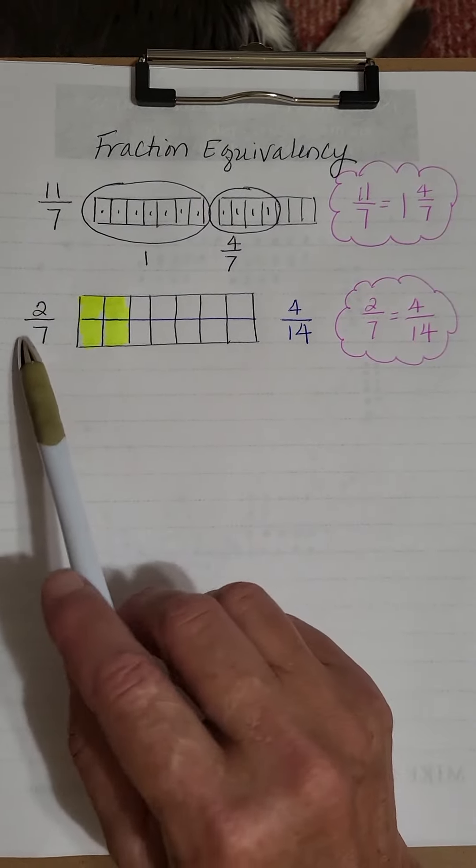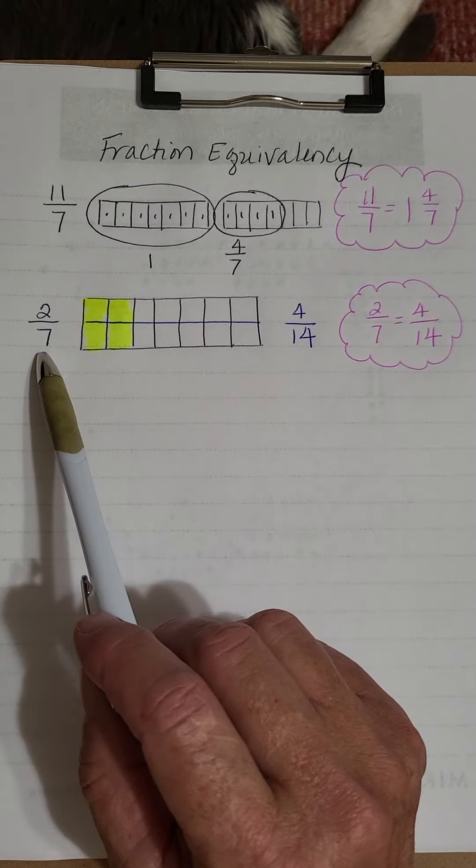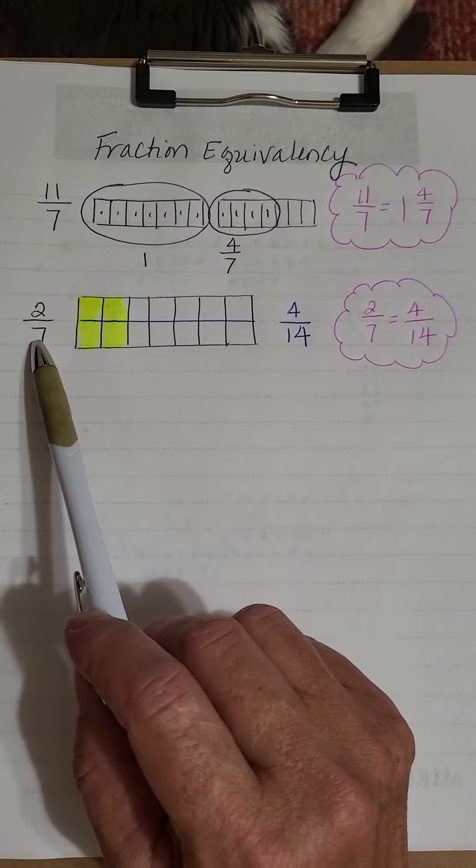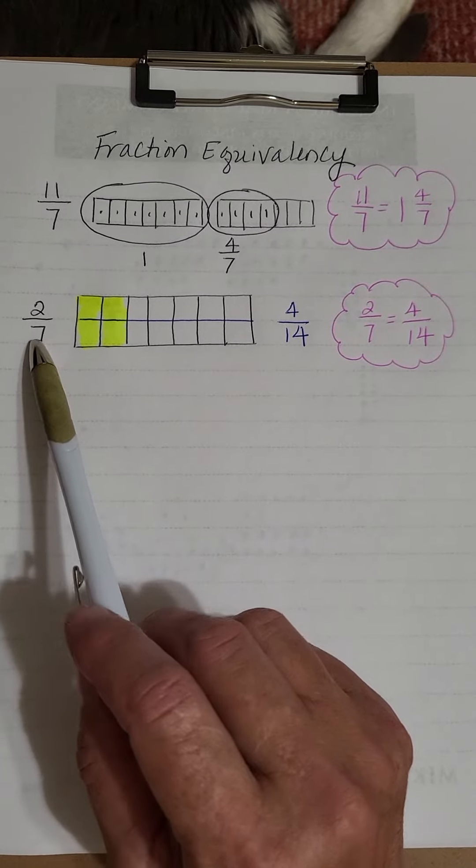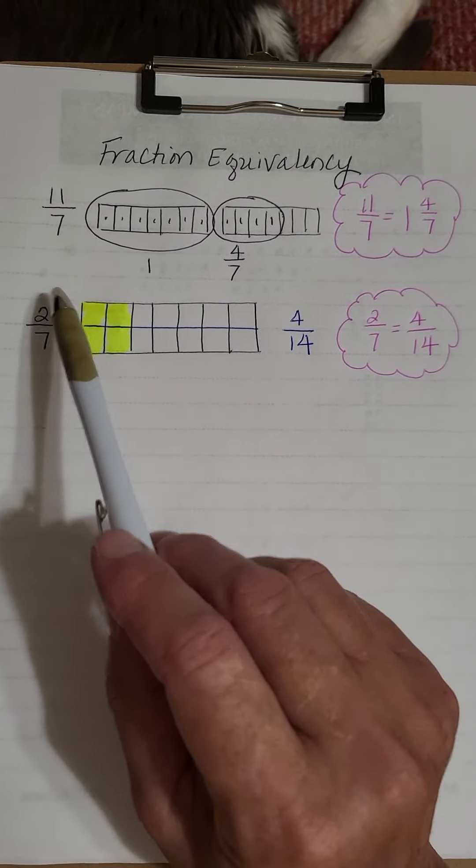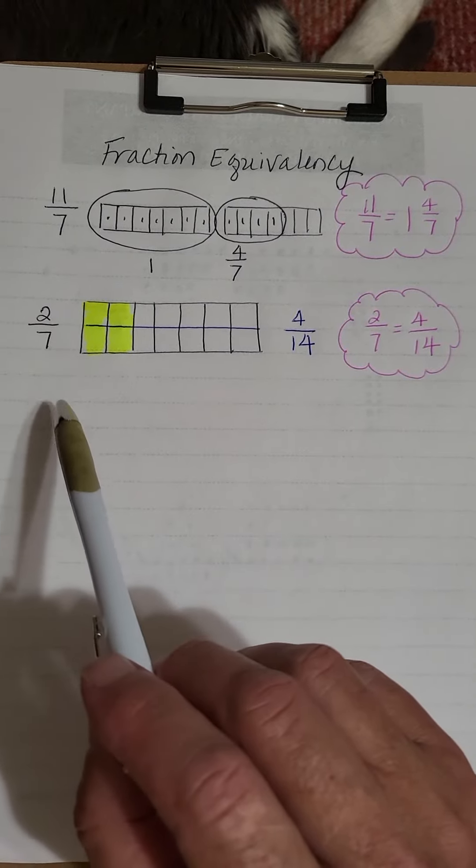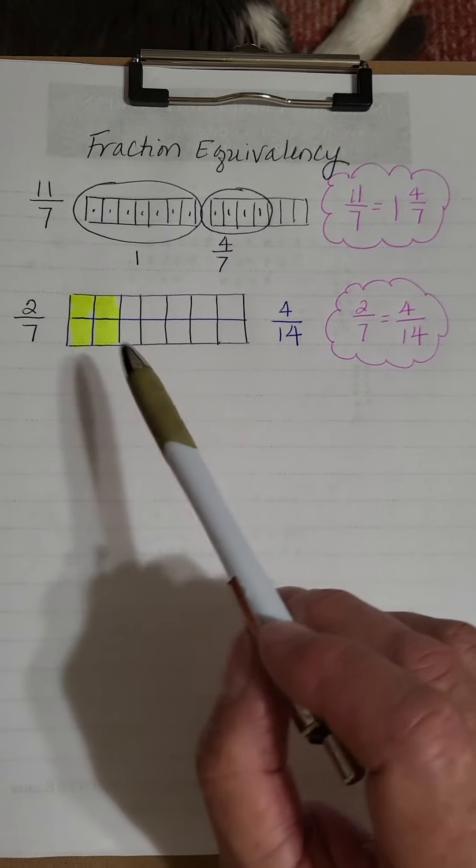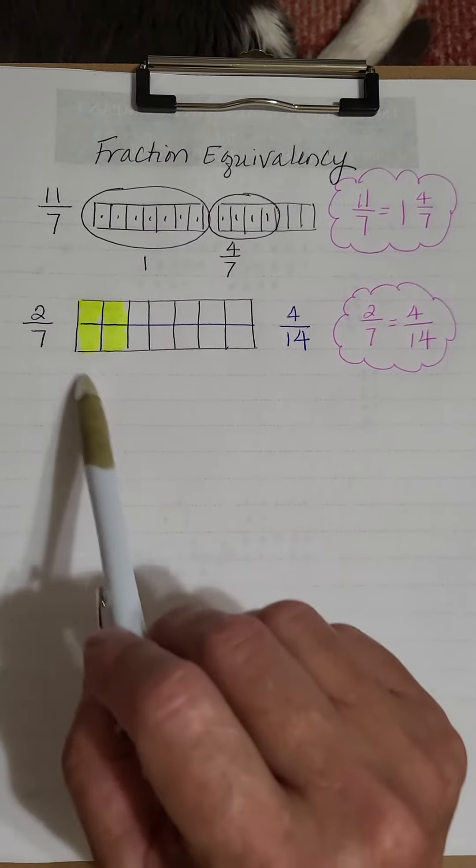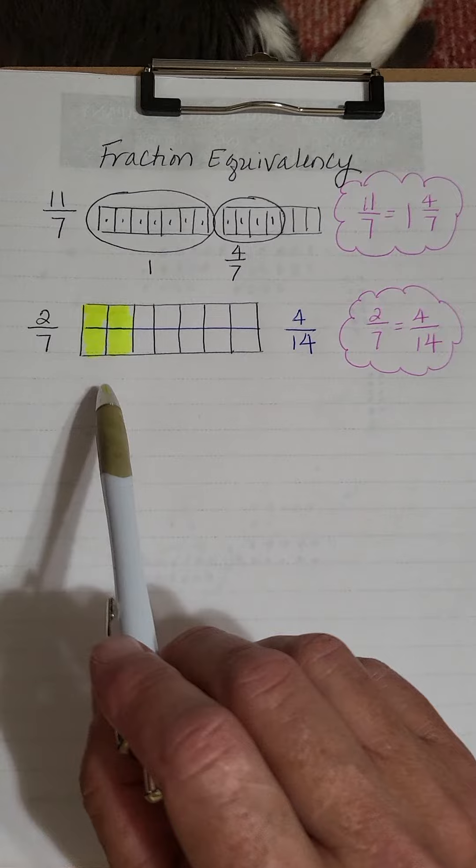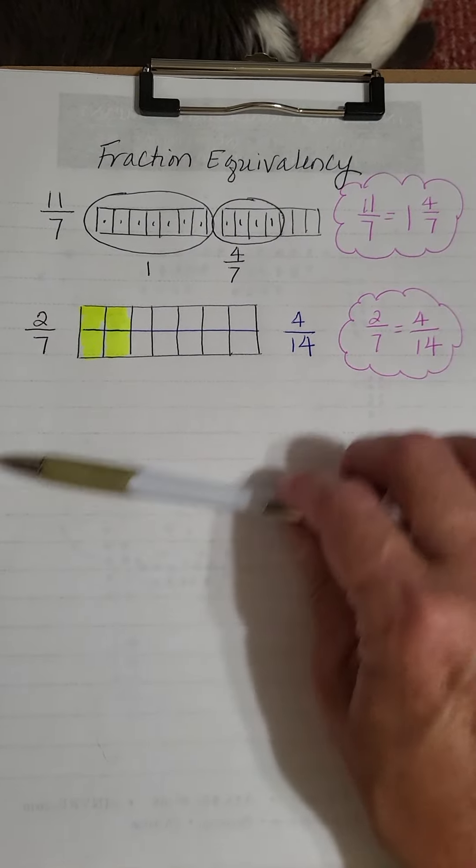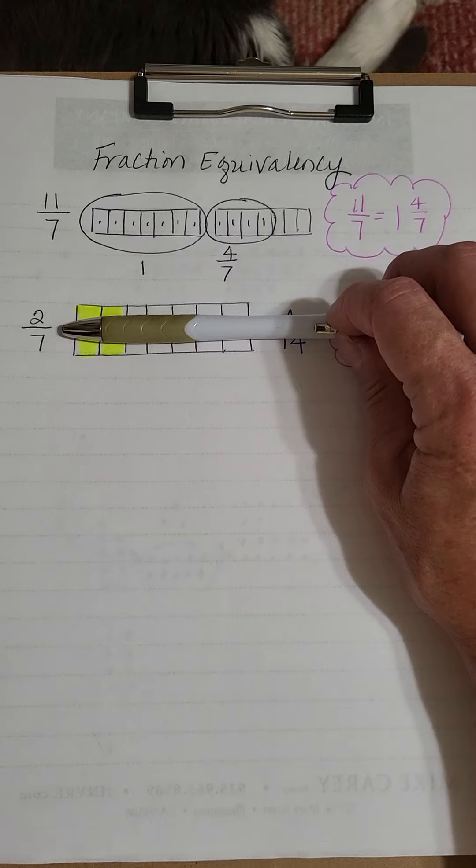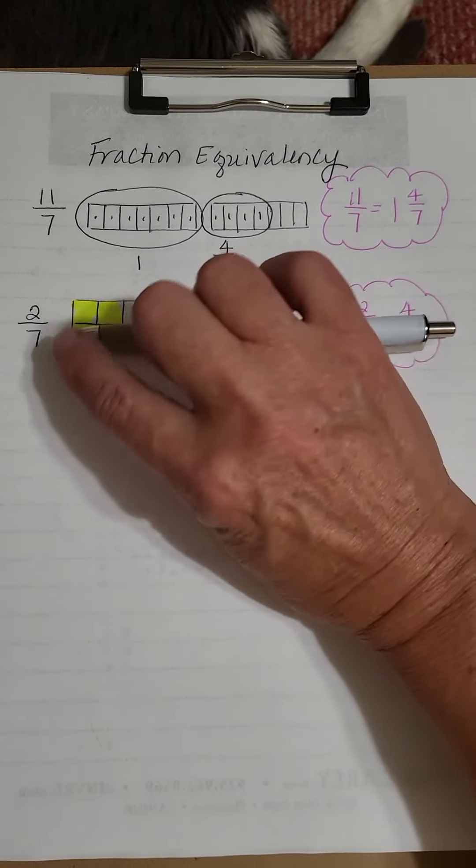Then I decided it would be kind of nice to try to show equivalency with different fractions that have the same relationship. So two pieces over 7 is the same proportionally as four pieces over 14, and that can be proved with a larger tape diagram by starting with two pieces out of seven with no line down the center. So I have seven pieces,